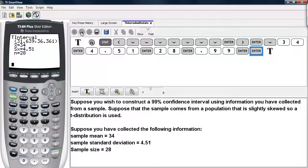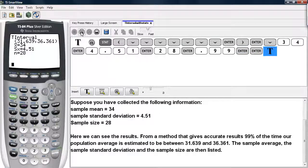And here we see the results. So from a method that gives accurate results 99% of the time, our population average is estimated to be between 31.639 and 36.361.